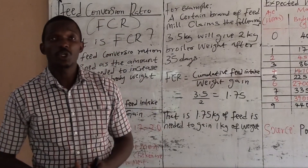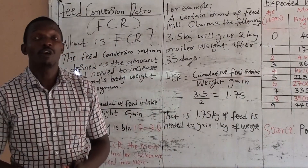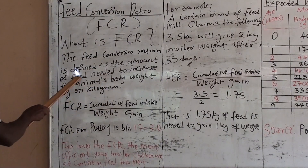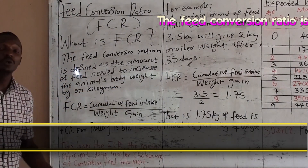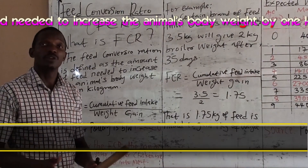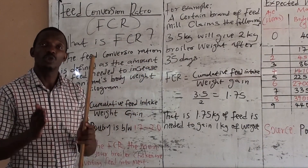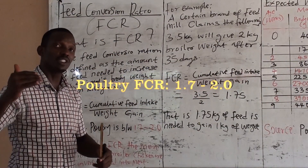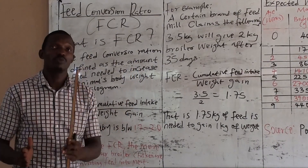The next parameter is the Feed Conversion Ratio, known as FCR. The feed conversion ratio is defined as the amount of feed needed to increase the animal's body weight by 1 kg. Every livestock has their own feed conversion ratio. For poultry, the range is normally between 1.7 to 2.0. The lower, the better — anything approaching 2.0 is not favorable.